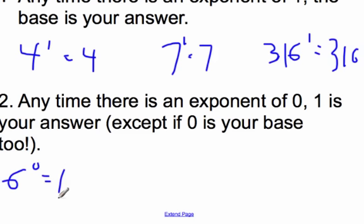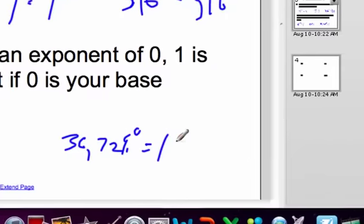If we have 35 to the 0 power, your answer is going to be 1. I think you get the idea. If we had 36,729 to the 0 power, that would equal 1. So you get the idea there.